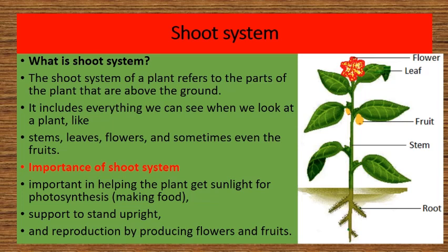What is the shoot system? The shoot system of a plant refers to the parts of the plant that are above the ground. It includes everything we can see when we look at a plant, like stems, leaves, flowers, and sometimes even the fruits. You can see here the image of the shoot system plant labeled with stems, leaves, flowers, and fruits. The underground part is the root system.